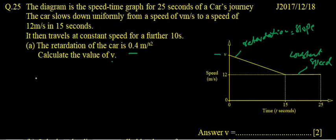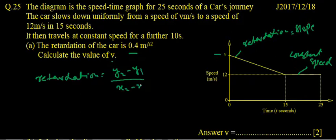So we apply the formula of retardation. Retardation is basically y2 minus y1 upon x2 minus x1. If we find our two coordinates, one is here: x is 0 and y is V, or the speed is V. And the second coordinate is 15, x is 15 or the time is 15, and the velocity is 12.